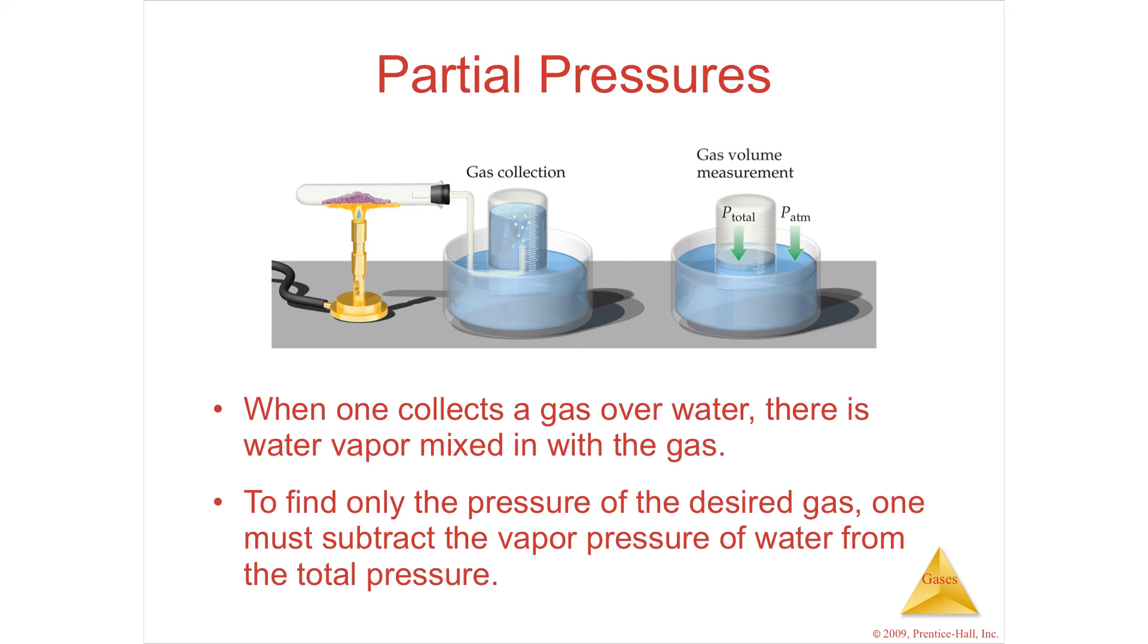The problem is that some of that water has become water vapor. As you have bubbled the air through the water, you force some of that water to have enough energy to escape as gaseous water, which means that you're going to have to subtract that. If you want to find out how much gas you actually made, you're going to have to subtract the amount of water vapor that's sitting above your sample, mixed in with your sample.